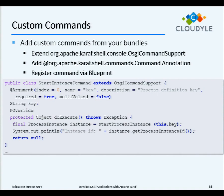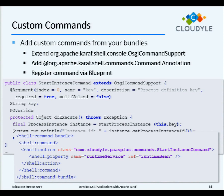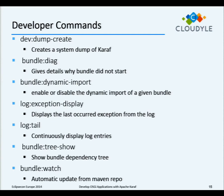This is the Blueprint configuration that you have to add. Here is an overview of some of the most interesting commands from the developer perspective. From the command shell you can create a complete system dump with all information about the running system, which helps for debugging problems. For each bundle you can get details on why it did or did not start. You can get exceptions directly from the log without searching through it. You can watch the logs and show dependencies of your bundles. Quite interesting for development, you can watch a bundle, and when you make builds on your local machine, the server automatically updates existing bundles.